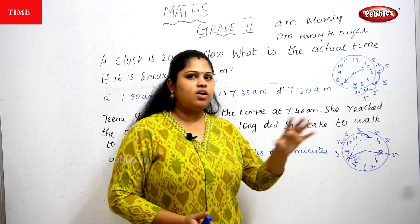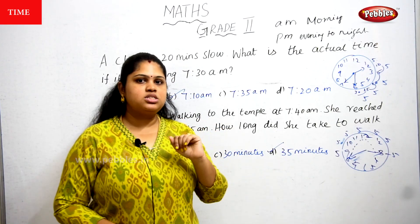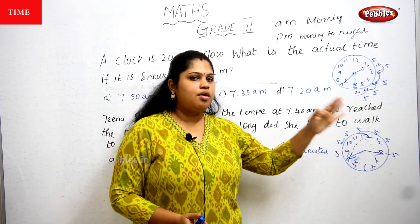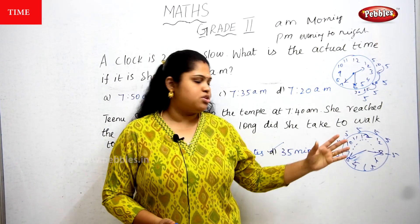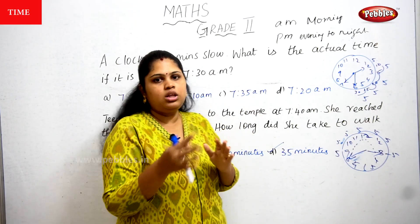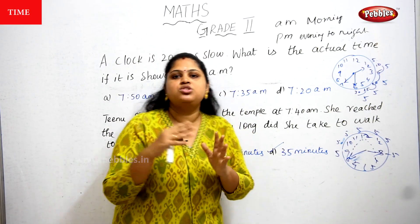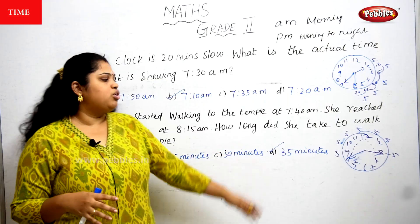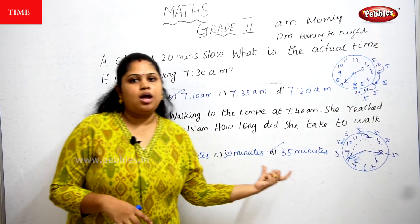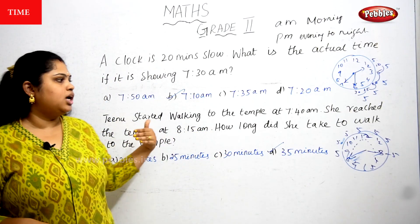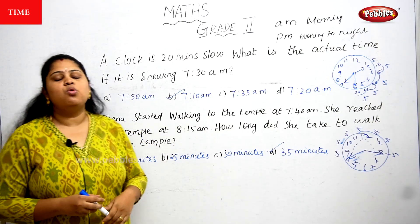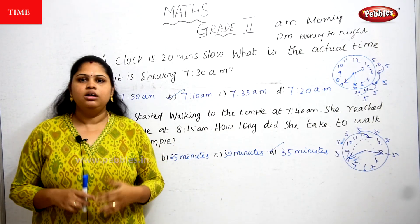Because from 9 to 10 there are 5 minutes, and from 10 to 11 again 5 minutes — each gap on the clock has 5 minutes. So if you add all the 5-minute intervals together, you get the total time from when she started to when she reached.